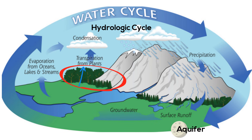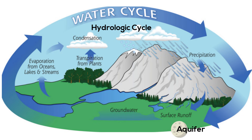Or it may be released back into the atmosphere through transpiration. Transpiration occurs when leaves from trees and other vegetation give off water vapor through pores in their leaves. Some water on the earth's surface is not absorbed by plants or become groundwater — it becomes surface runoff.